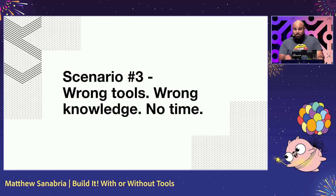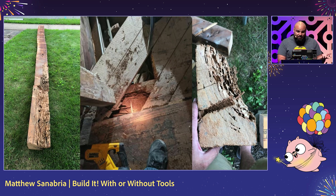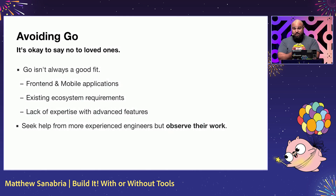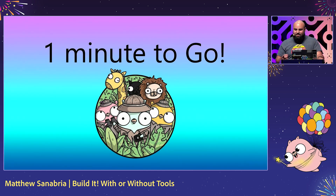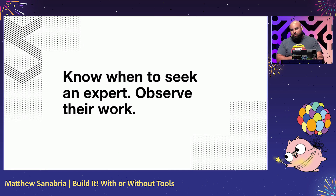Scenario three — this one hurts the most: you have the wrong tools, you don't have the knowledge, and you have no time. This happened when I discovered my primary beam was termite-rotten. It was sealed up so we couldn't find it in the inspection, and the previous homeowner is no longer around to ask. This was a blocker, so I hired people with expertise I didn't have — but I observed their work and noticed what they were doing and what tools they were using. In software, there are times where you should actually say no to Go — it's not always a good fit. If you're doing front-end or have existing requirements, you probably shouldn't use Go. But if you're out of your depth, seek help from more experienced engineers, observe their work, and learn. The point: know when to seek out an expert and observe their work.